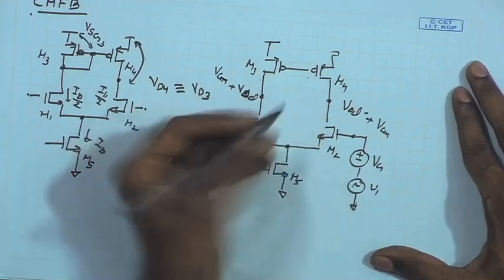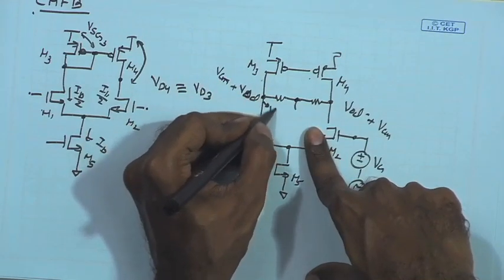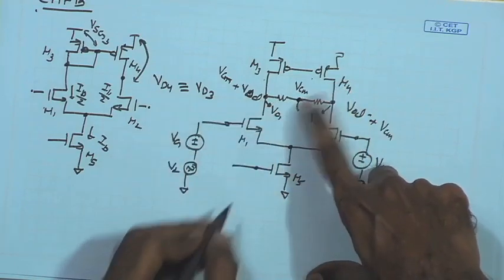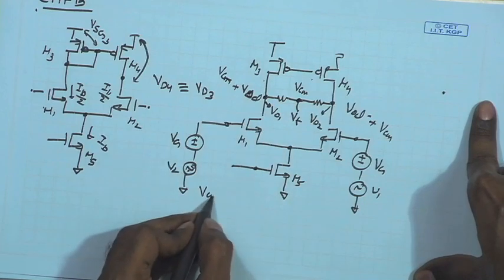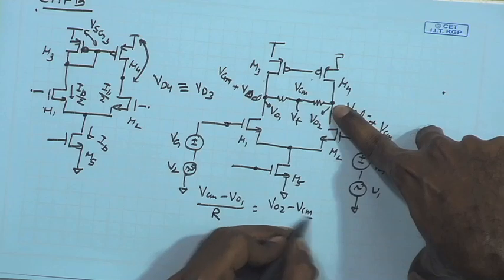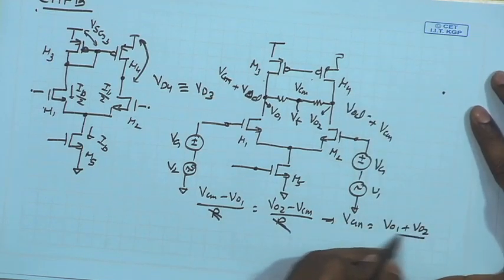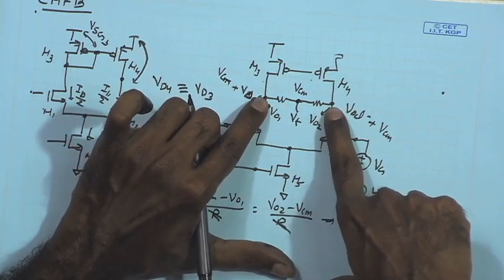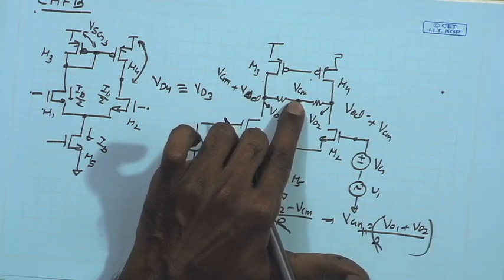To extract the common mode signal, we can use a resistive divider. Calling the two output voltages V_o1 and V_o2, we solve KCL at the midpoint node V_t: (V_cm − V_o1)/R = (V_o2 − V_cm)/R. Since the two resistors are equal, we get V_cm = (V_o1 + V_o2)/2. So the central point of the resistive divider captures only the common mode signal, which is exactly what we want in order to set the common mode level.